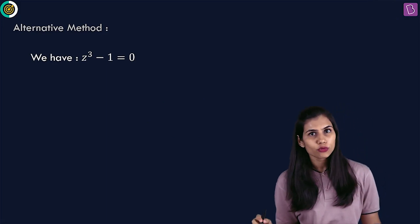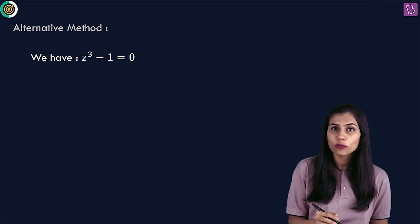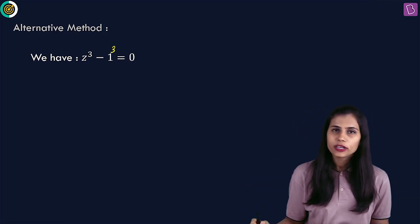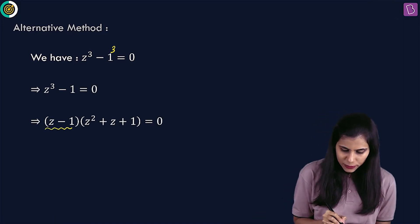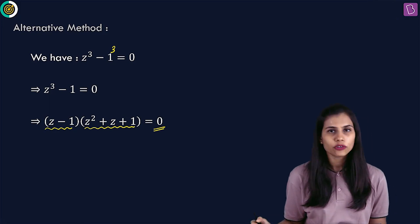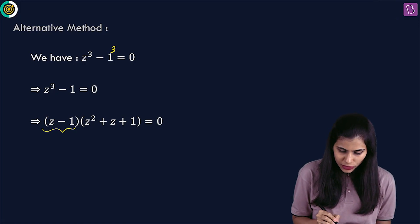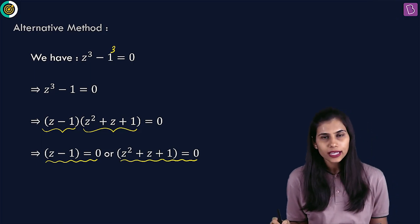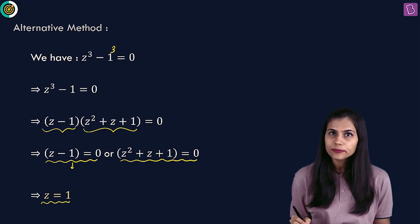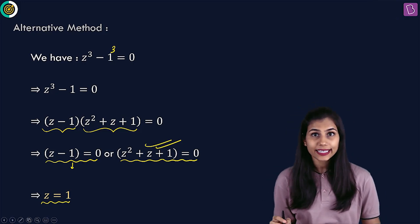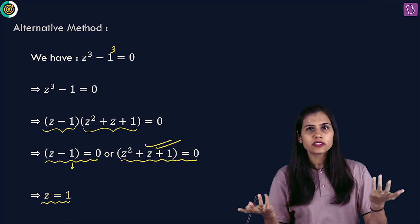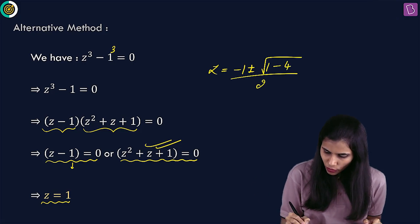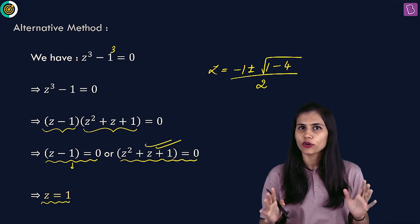Finding cube roots of unity is equivalent to finding roots of z cubed equals 1, or z cubed minus 1 equals 0. Using the formula for a cubed minus b cubed, this factors as z minus 1 into z squared plus z plus 1 equals 0. When the product of two things is 0, either the first quantity is 0 or the second is 0. Equating the first with 0 gives z equals 1. The second gives a quadratic in z, solved using the quadratic formula: z equals minus 1 plus or minus root over 1 minus 4, all over 2.